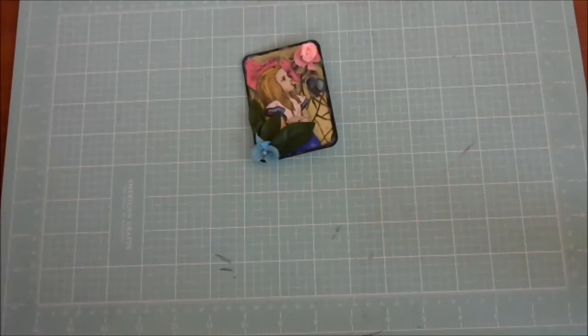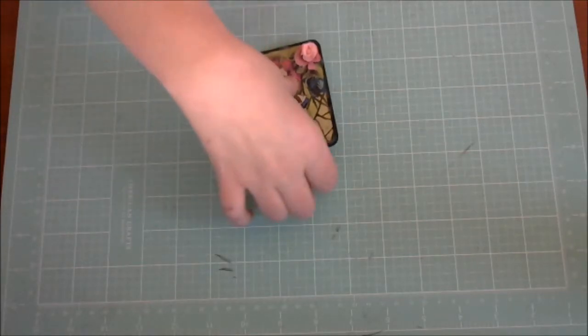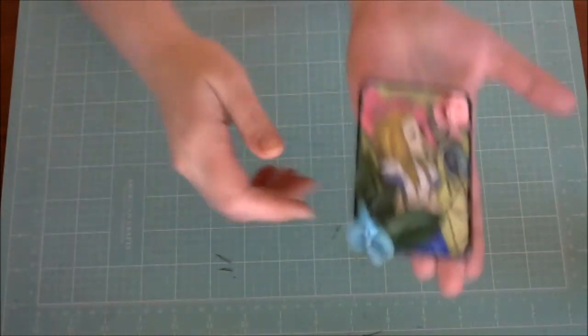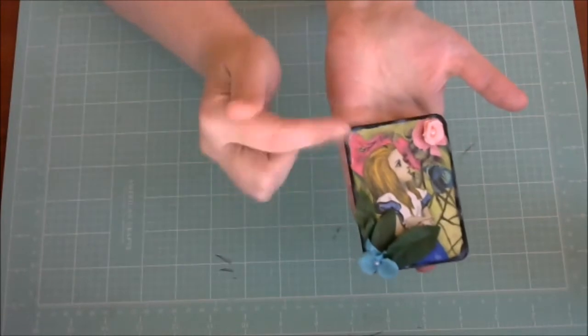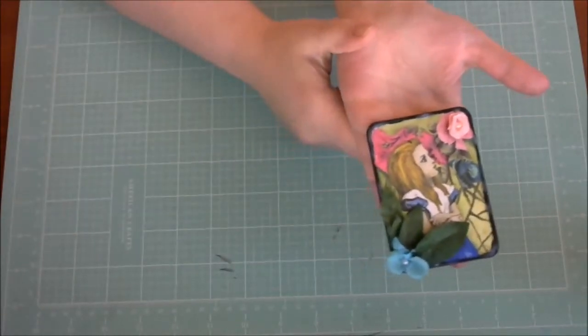She wanted us to make some ATCs for her and send them to her. So what I did was, this is actually still a little wet. You can see here I put some glossy accents to seal the acrylic paint that I used for the edges.